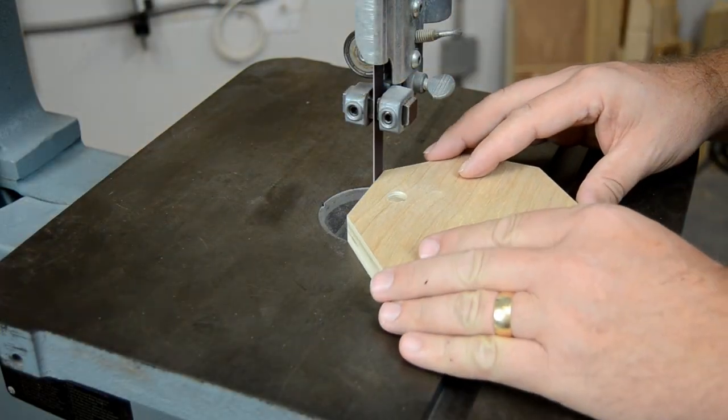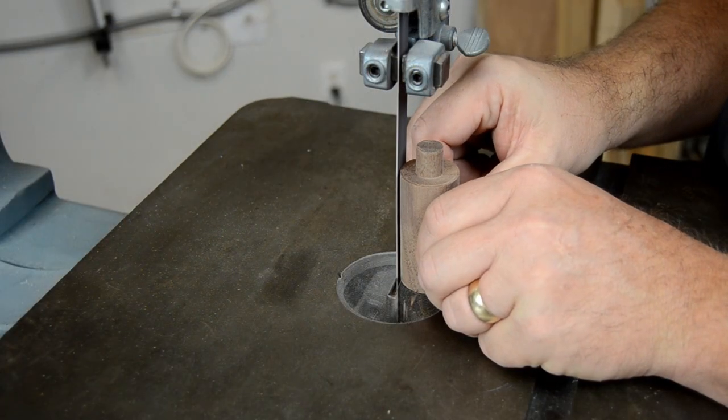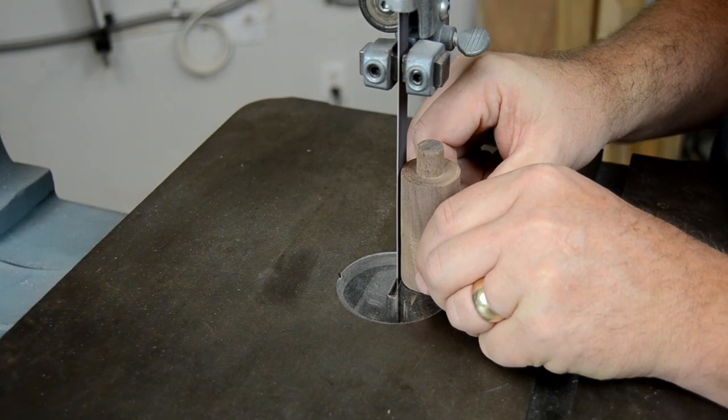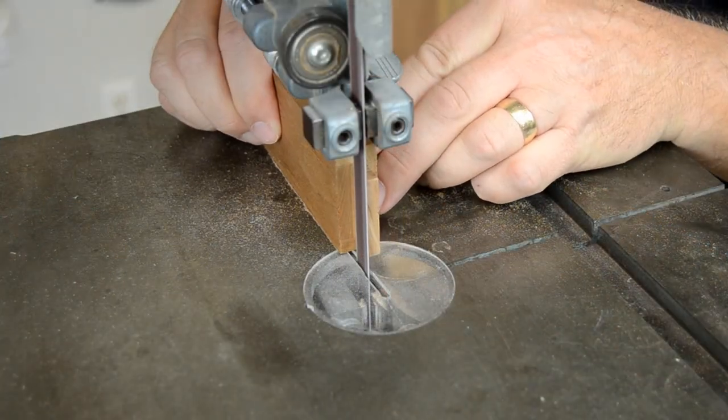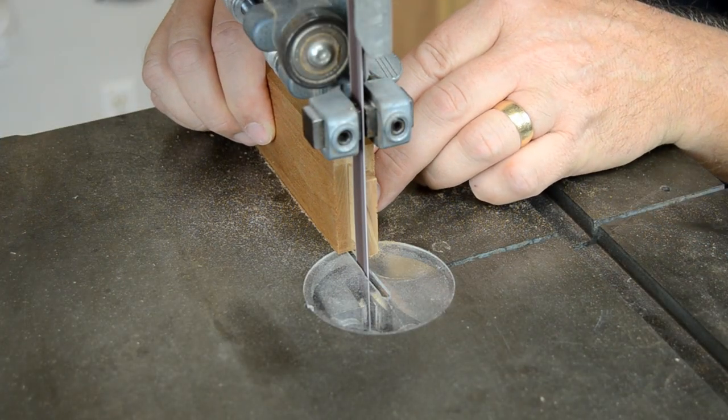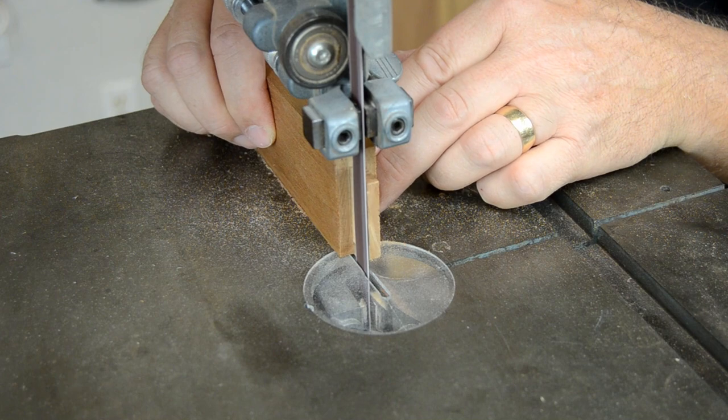They're excellent for sanding all sorts of small and odd-shaped parts, but perhaps their best feature is the ability to sand right into square corners, even in tight spaces.